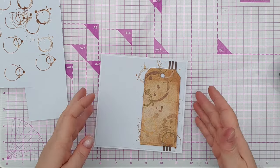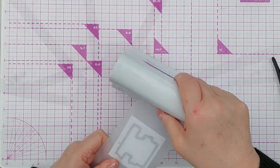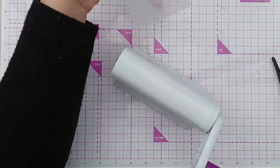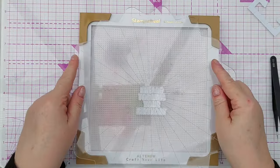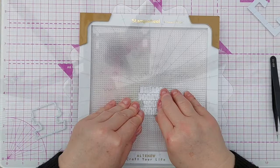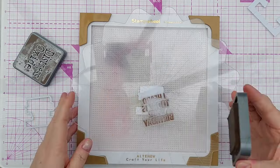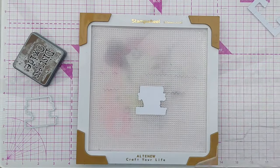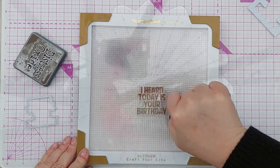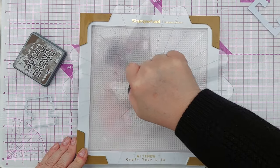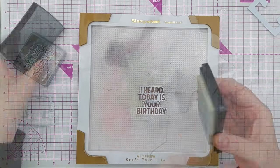So once that was done I set about preparing my sentiment. I die cut the sentiment piece from smooth white cardstock, popped it in my stamp wheel, and then stamped the sentiment 'I heard today's your birthday' using walnut stain, the dark one, because I want this to be quite attention grabbing. I ended up stamping it three times to get a really lovely crisp deep dark impression.